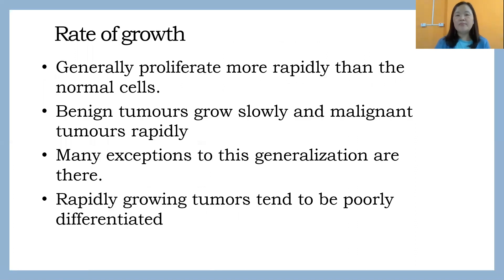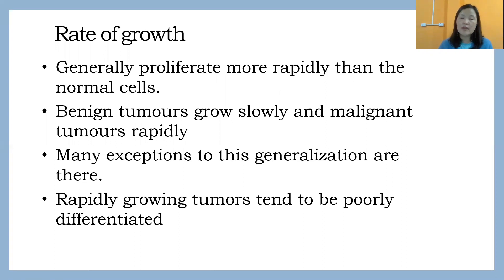Rate of growth means how the tumor is growing. Generally, according to normal physiology, one mother cell will give rise to two daughter cells according to mitosis. But in case of neoplasia, the growth is not under that control — it can give rise to two, three, four, five, or many more daughter cells. Generally, benign tumors grow slowly as compared to malignant tumors. The generation time of a rapidly growing tumor tends to be poorly differentiated — it will not resemble normal structure. So a tumor growing quickly will not resemble normal tissue.